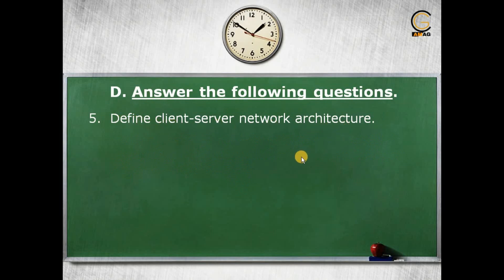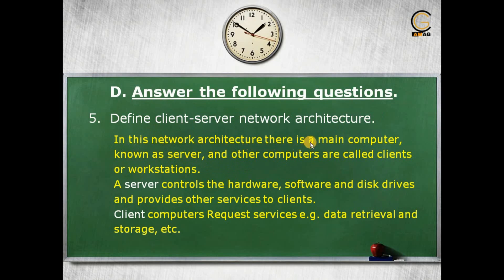Next question: define client-server network architecture. In this architecture there is a main computer known as a server, and the other computers are called clients, workstations, or nodes. The server controls the hardware, software, and disk drives, and provides services to the clients. Client computers request services from the server; the server gives data to the client and also grants storage access if needed.